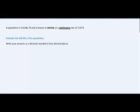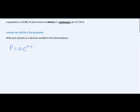Since the given information is in terms of a continuous rate, I'll use the continuous formula to model this population, which looks like P = Ae^(kt), where A is the initial population, k is the continuous rate as a decimal, t is time in years, and P is the future population.